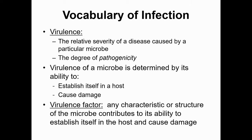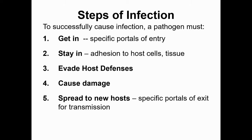The steps a pathogen must take: first, it has to get in through the correct portal of entry. For example, coronavirus is respiratory — it has to enter the respiratory system. If you are exposed through the wrong portal of entry, the rest of the process doesn't happen. It also has to be able to stay in — that has to do with adhesion, adhering to host cells or tissues. It has to evade host defenses, such as using the glycocalyx capsule as an invisibility cloak.